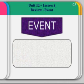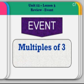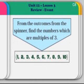The event we are going to be looking for is multiples of 3. From the outcomes from the spinner, find the numbers which are multiples of 3. So for the numbers 1 through 10, which are multiples of 3.